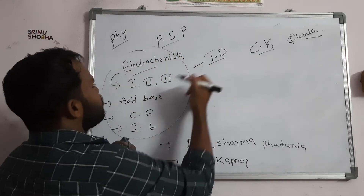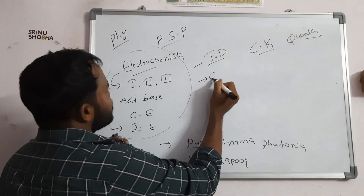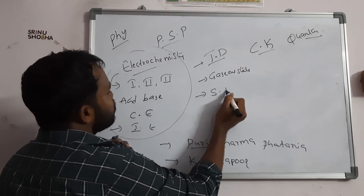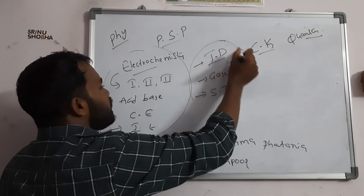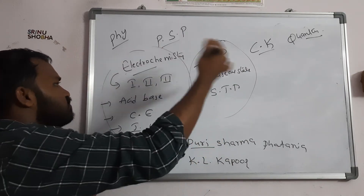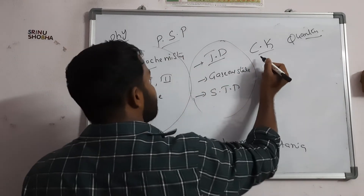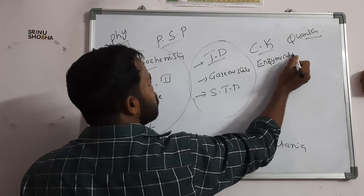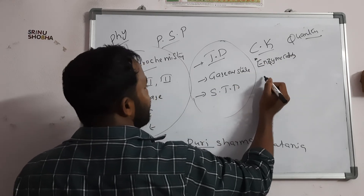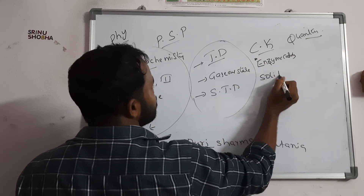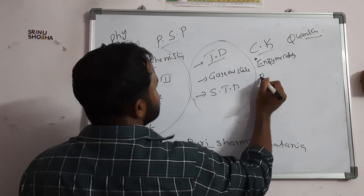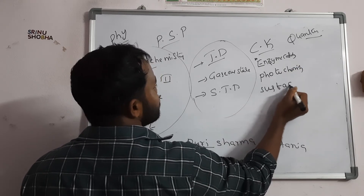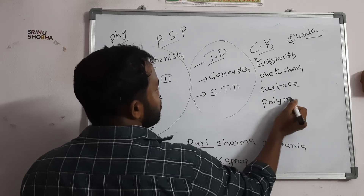In thermodynamics, you can read the gaseous state and statistical thermodynamics — all are at one place, easy to cover. Divide your study station-wise: electrochemistry and thermodynamics together. In chemical kinetics, follow enzyme catalysis — that is a compulsory question most times. Also prepare solid state, photochemistry, surface chemistry, and polymers.